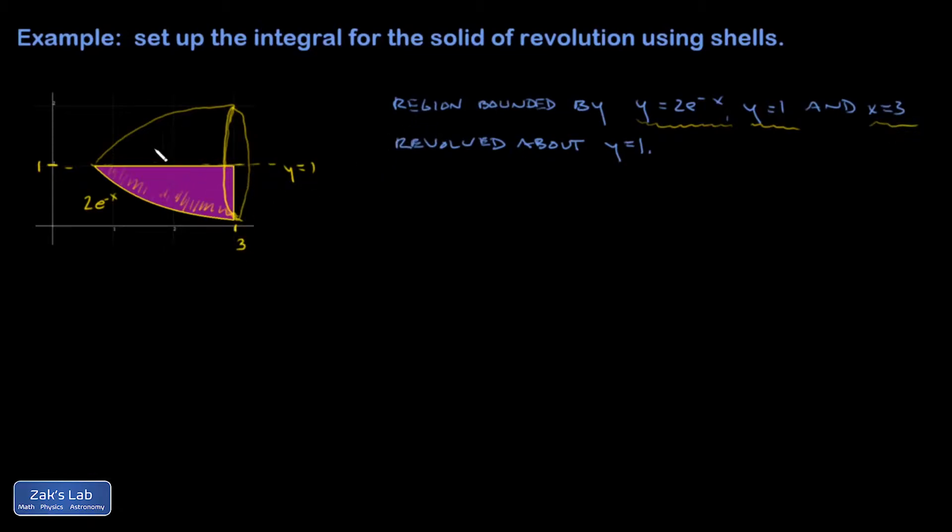I want to use nested cylindrical shells for this, and that requires that I use shells that have the same symmetry axis as the solid of revolution that I'm looking at. So I'm going to do all these nested shells like this.